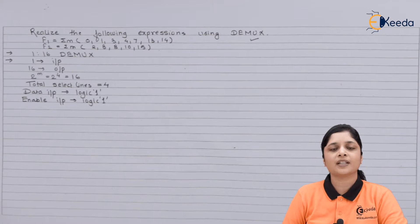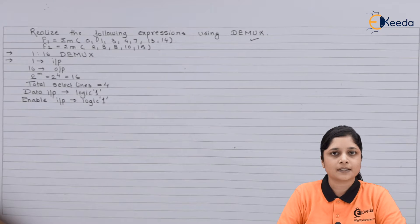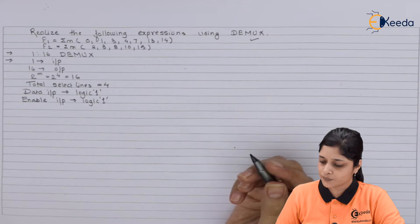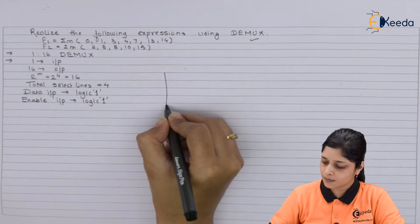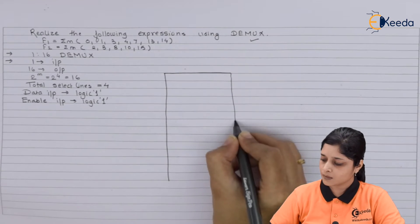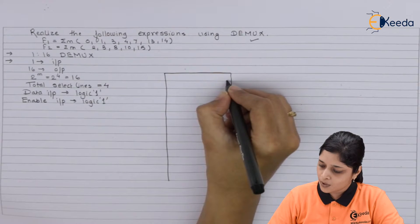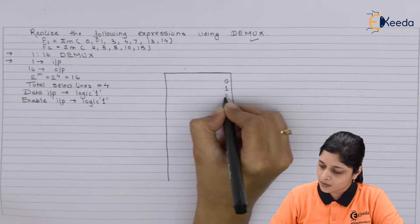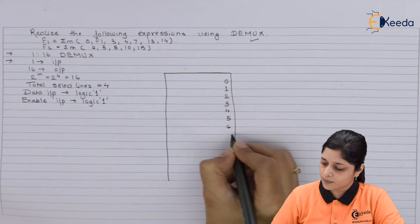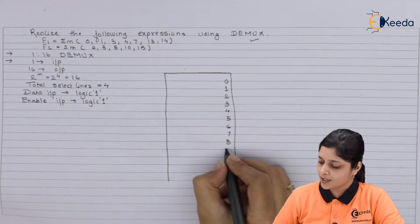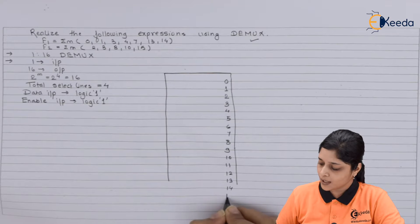Now we are going to realize the logic diagram for demultiplexer. Let's start the realization. For that you have to draw circuit. Now we will define all the 16 outputs, so let's start with 0, 1, 2, 3, 4, 5, 6, 7, 8, 9, 10, 11, 12, 13, 14, and 15.